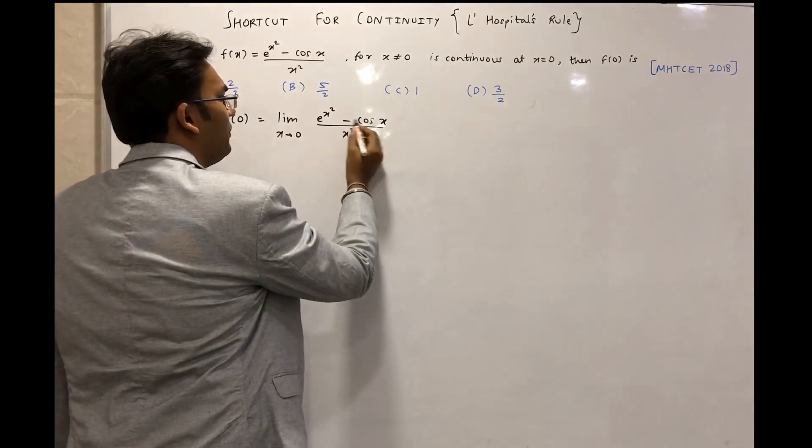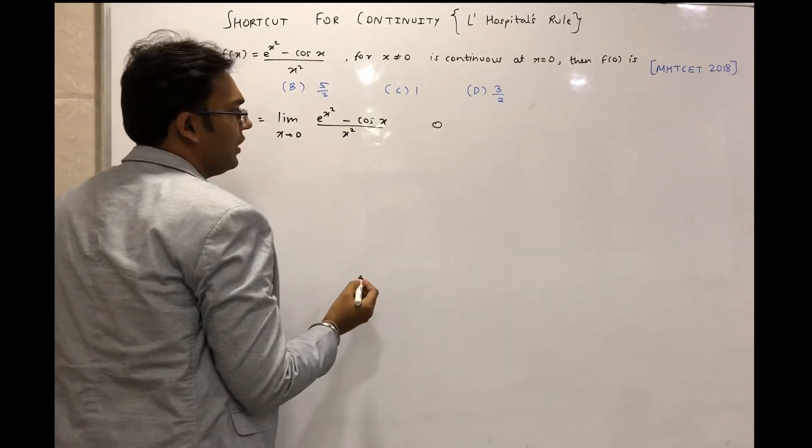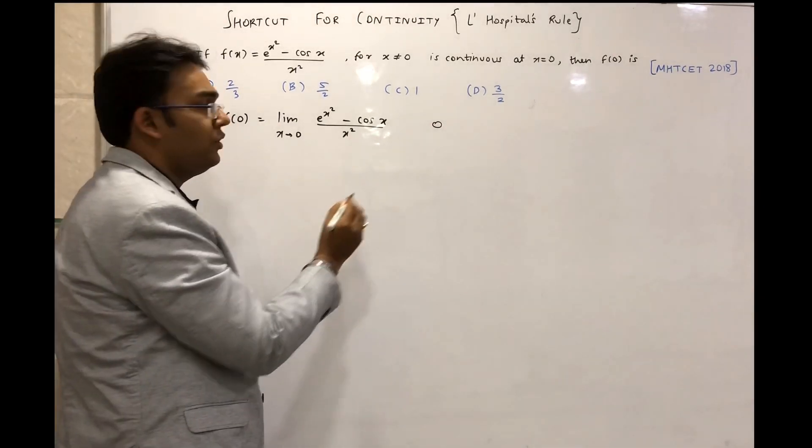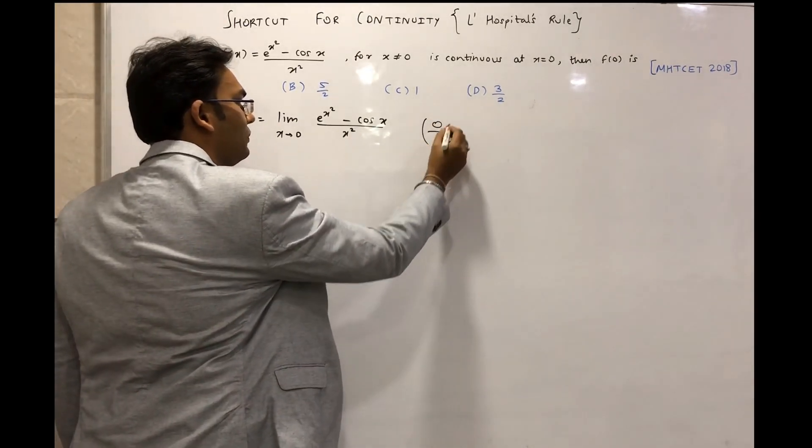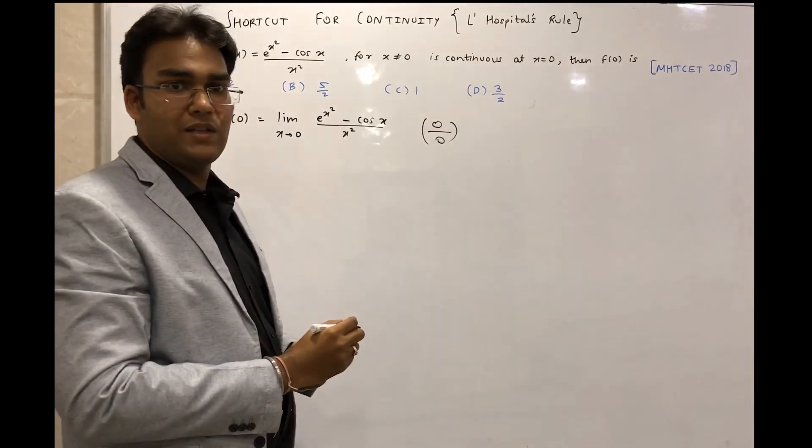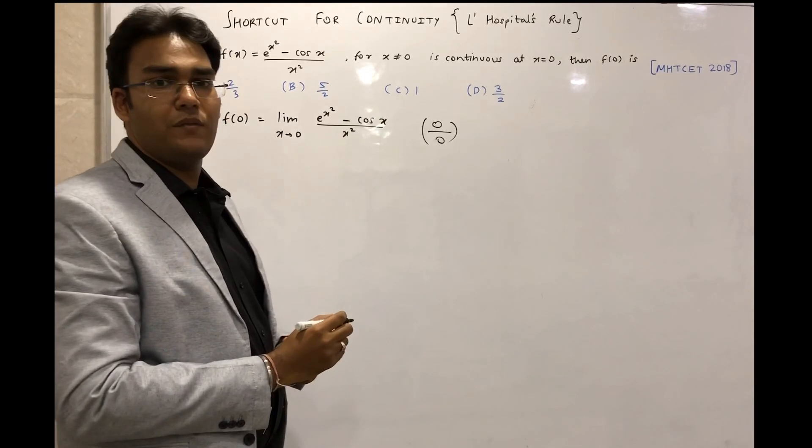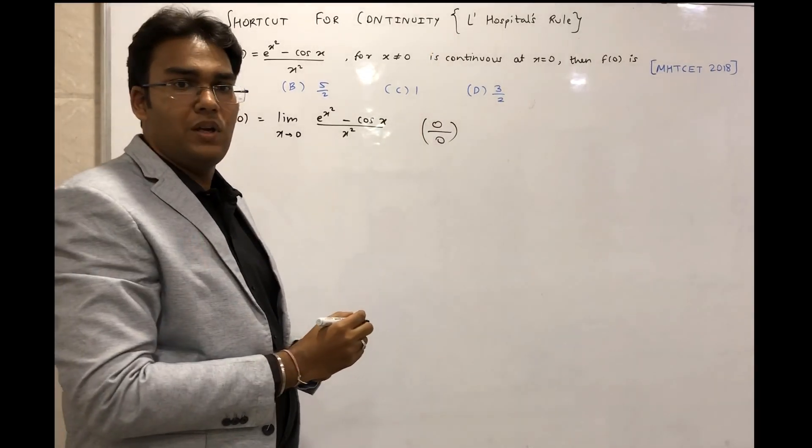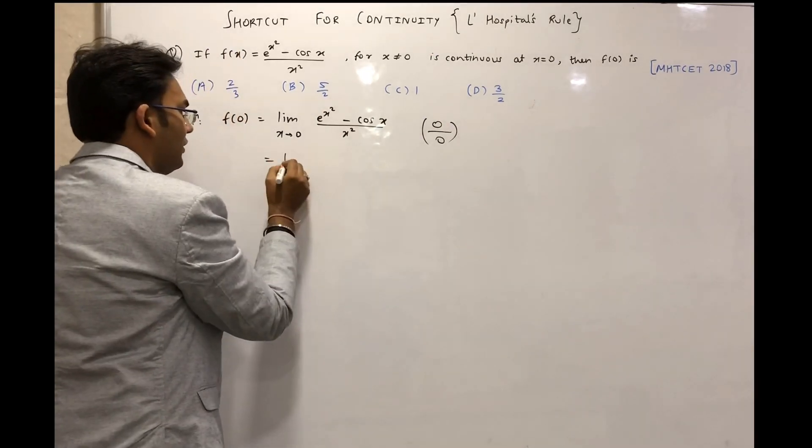So it will become 1 - 1 which is 0, and in the denominator also if we substitute x = 0 we will get 0. So this question is of the form 0/0. So whenever the question is of the form 0/0 we can apply this L'Hospital's rule.